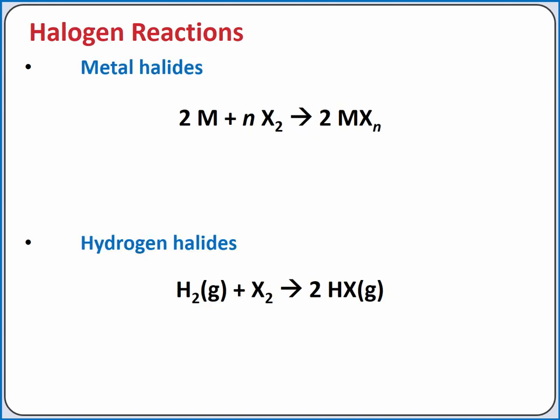Metals react with halogens to produce metal halides. In this reaction, the metal donates electrons to the halogen to produce an ionic compound. For example, aluminum metal reacts with chlorine gas to produce aluminum chloride.